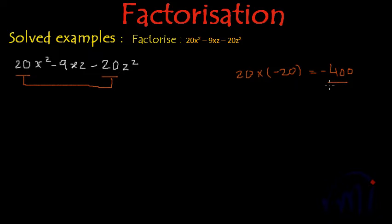This minus 400 tells us that one of the factors is negative. So I'm going to write the factors of 20. If I write the factors of this 20, they will be 5 multiplied by 2 multiplied by 2.